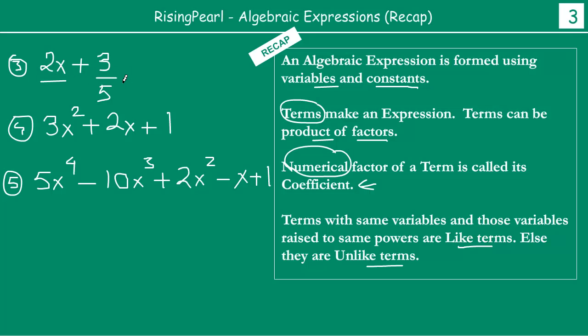So here again, the first expression has two terms - this and this. In the first term you have the variable, and second term is a constant where there is no variable. And in this term, x has coefficient 2. Now our fourth example has three terms - 1, 2 and 3. Here the first term is 3x squared where x squared has coefficient 3. The second term is 2x, where x has coefficient 2. And third term is the constant term 1, where there is no variable.